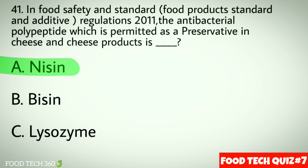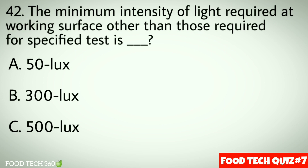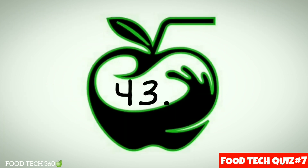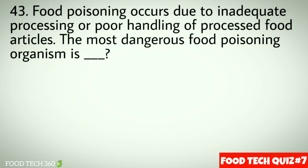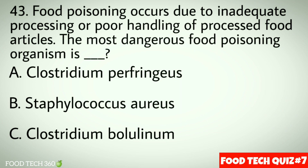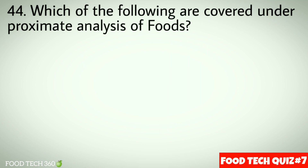Question number 42: The minimum intensity of light required at a working surface, other than those required for specific tests, is — options: a) 50 lux, b) 300 lux, c) 500 lux. Correct answer: b) 300 lux. Question number 43: Food poisoning occurs due to inadequate processing or poor handling of processed food articles. The most dangerous food poisoning organism is — options: a) Clostridium perfringens, b) Staphylococcus aureus, c) Clostridium botulinum. Correct answer: c) Clostridium botulinum.